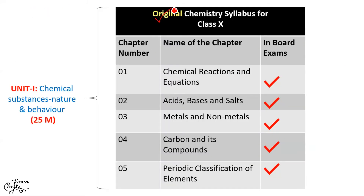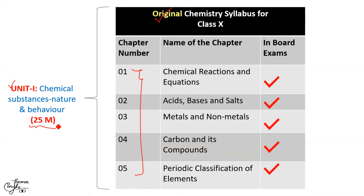I will begin with the original syllabus for Class 10 Chemistry. These are the five chapters as per NCERT, and you were supposed to know all topics in your NCERT textbooks from these chapters before COVID-19 struck. These five chapters collectively make up Unit 1, which is Chemical Substances, Nature and Behaviour. This unit comprising five chapters holds a weightage of 25 marks as per CBSE in your annual board examinations. Note that as per previous year board question papers, these 25 marks are not strictly adhered to — one or two marks less or more, generally less, has been the norm.